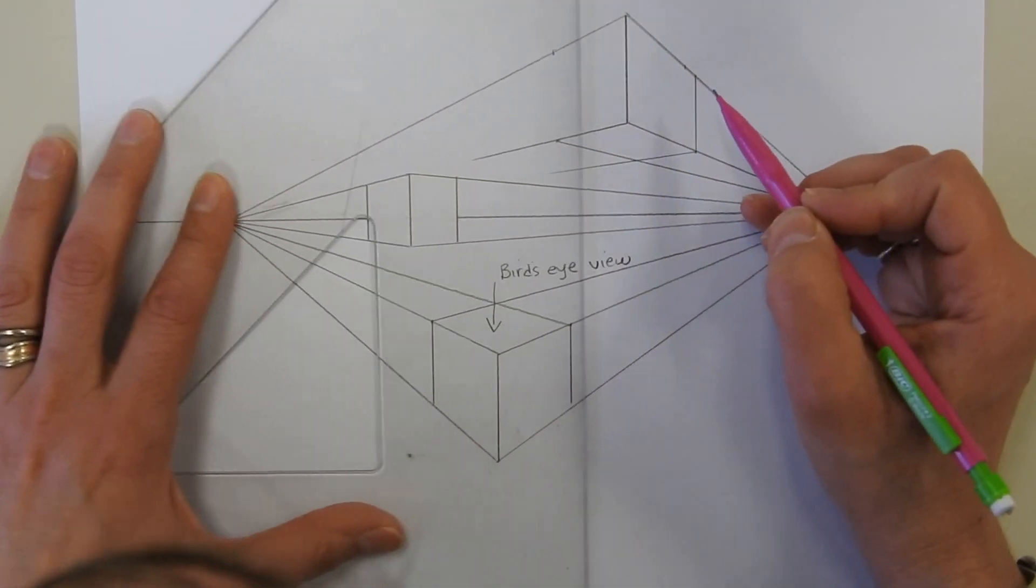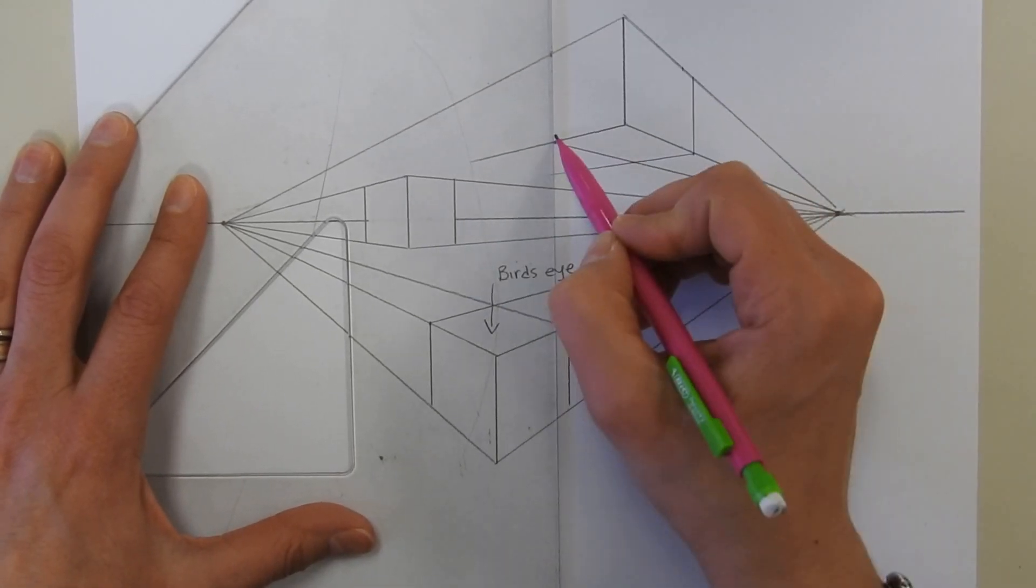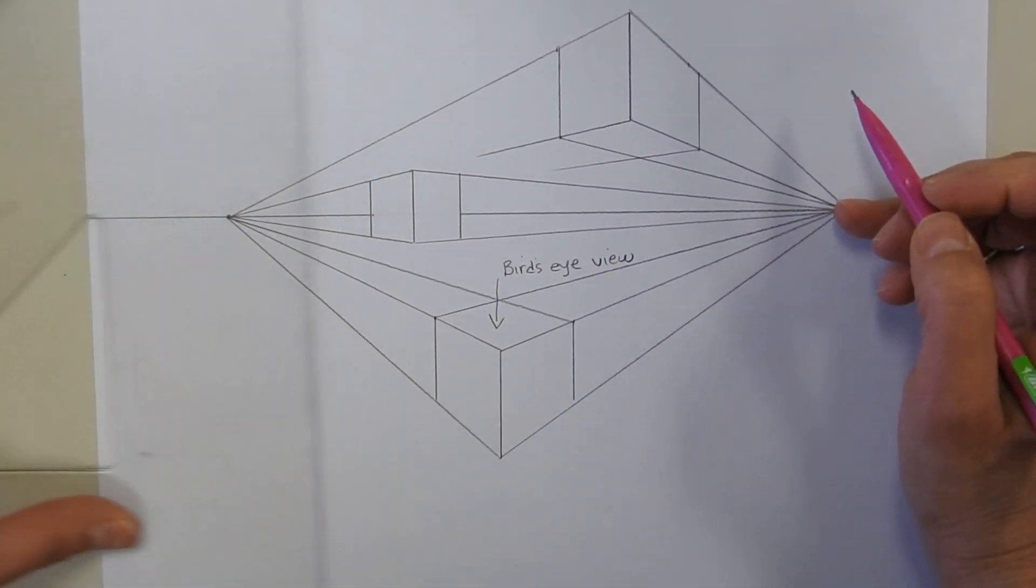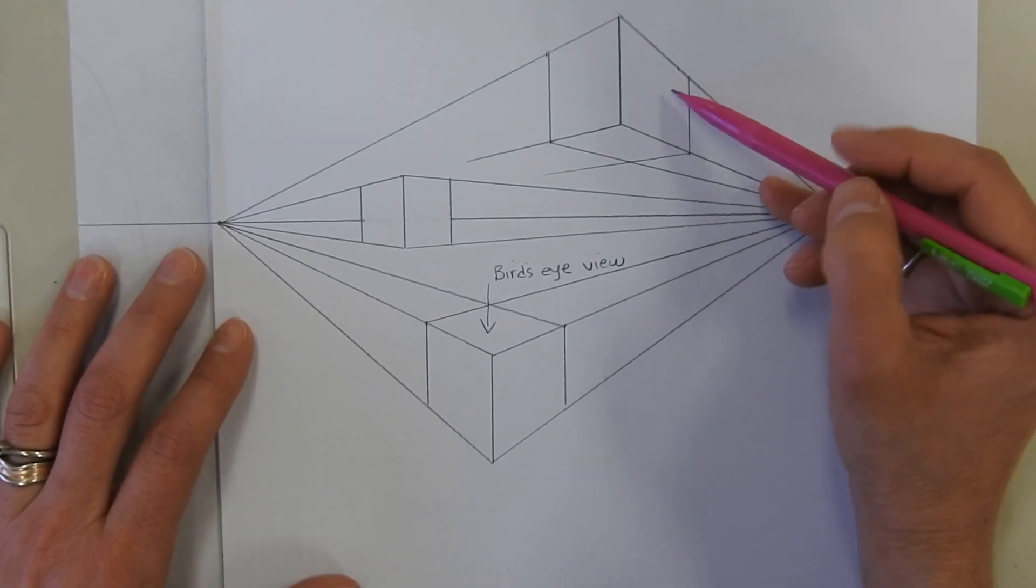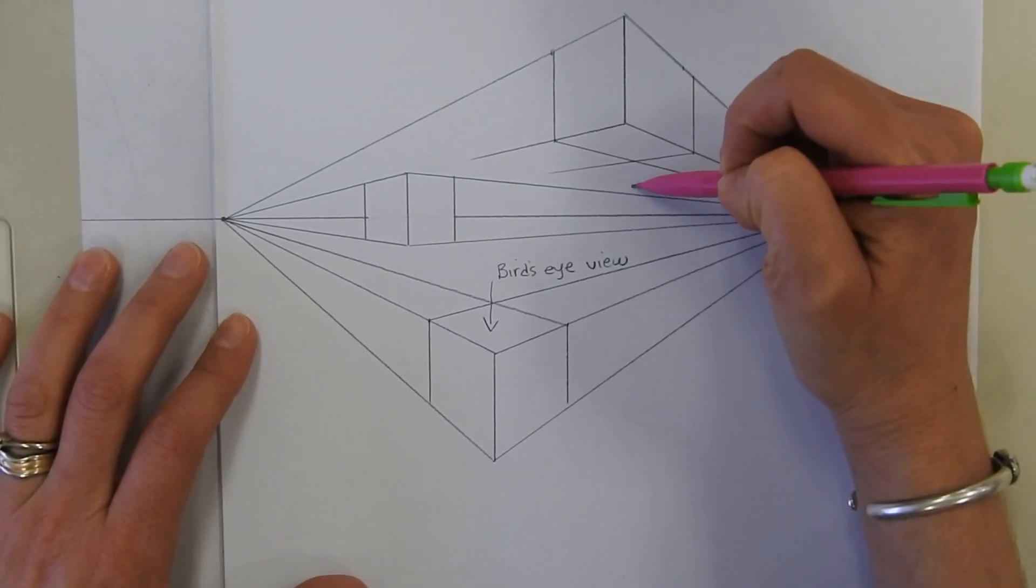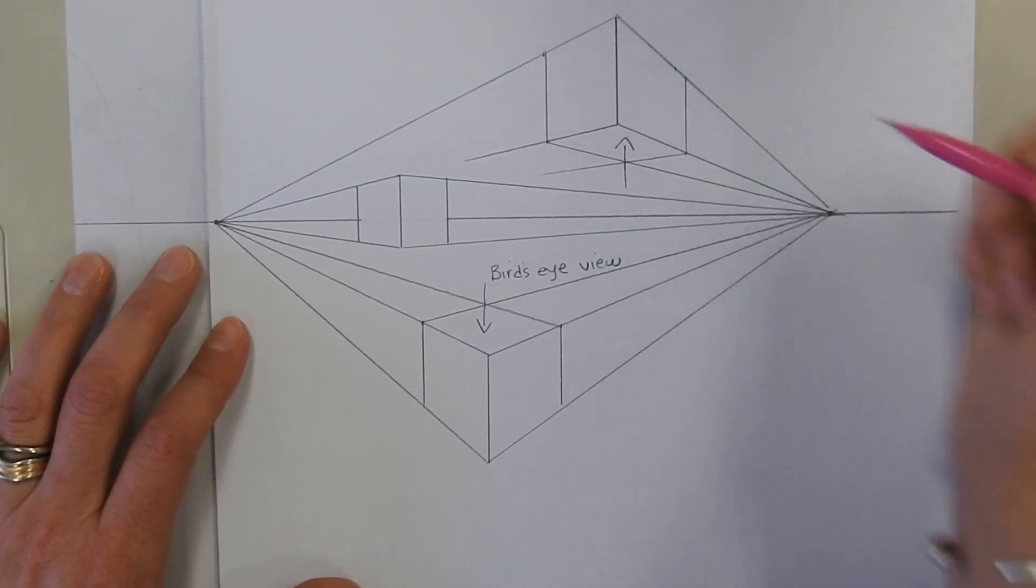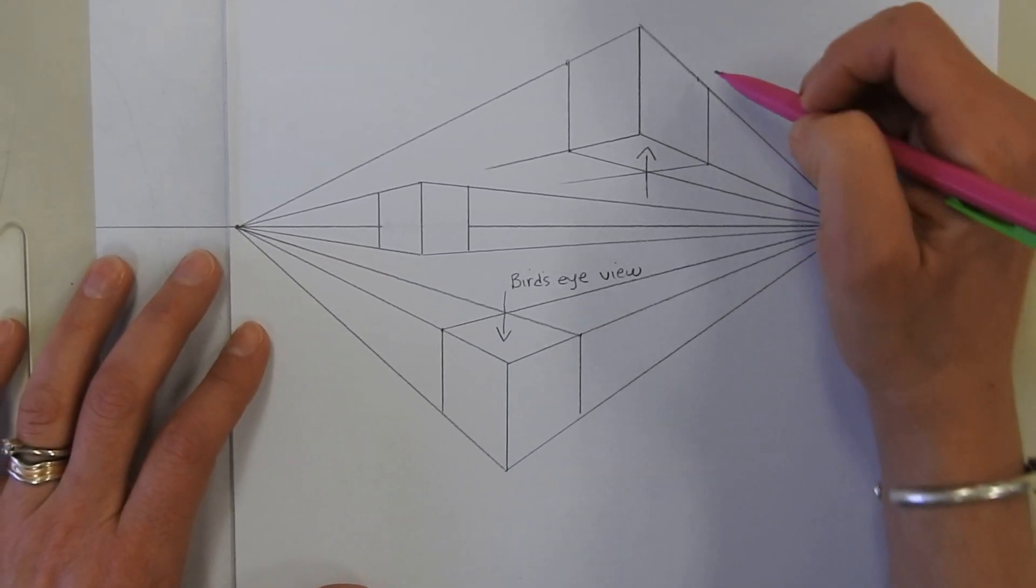...allows you to finish up right here. And now you have a cube that's above the horizon line. This cube here, we're looking up underneath it, so we call that a worm's eye view.